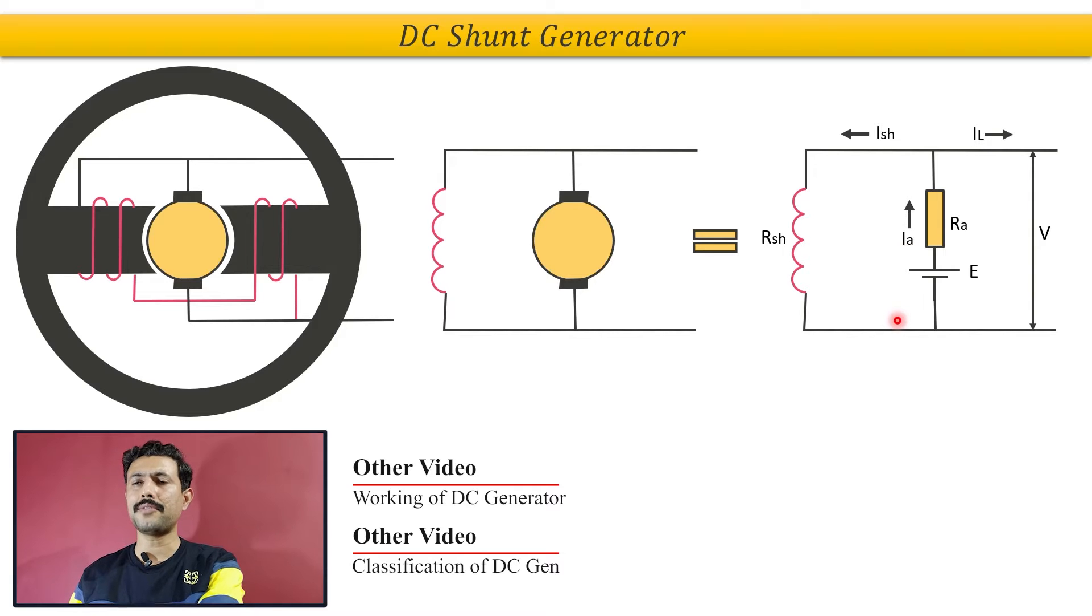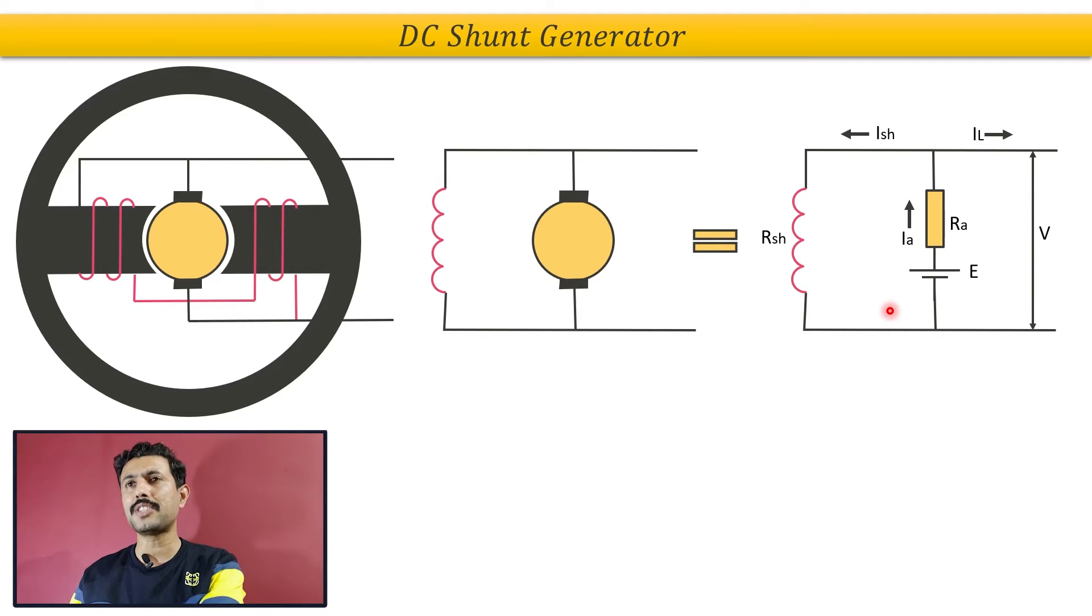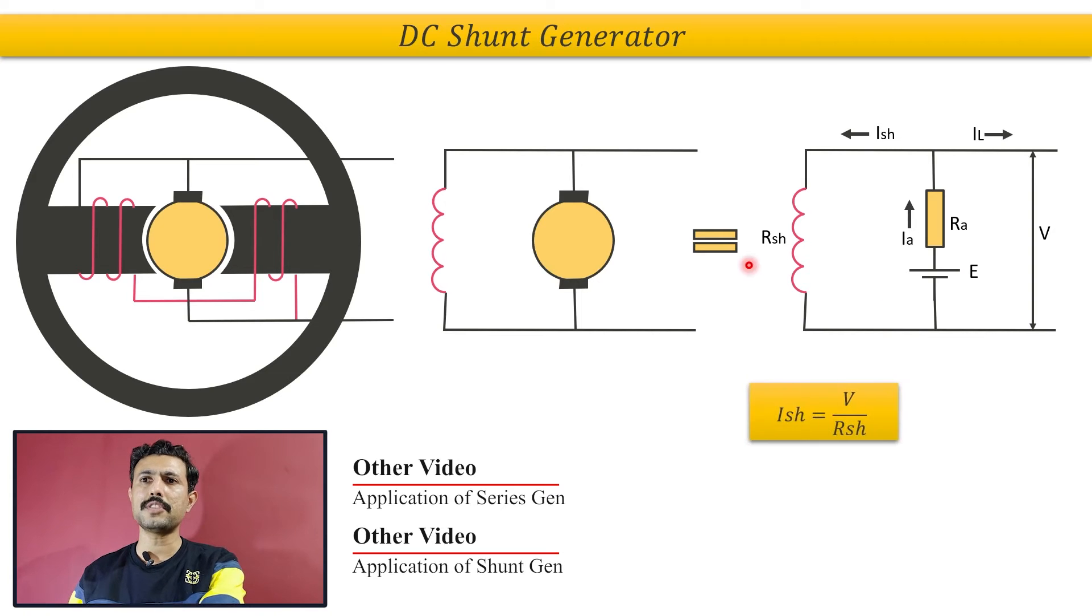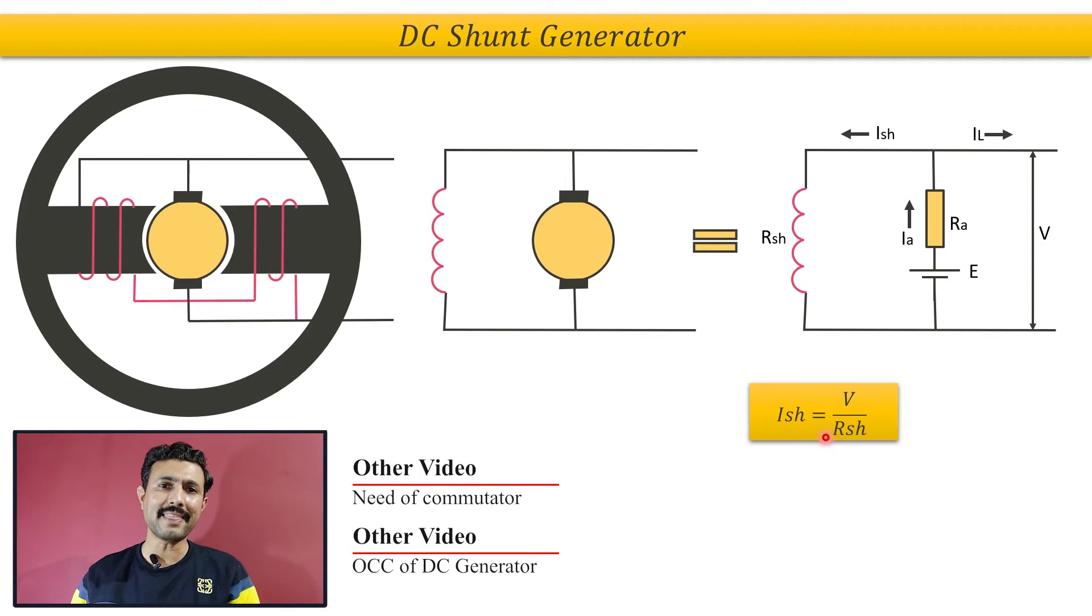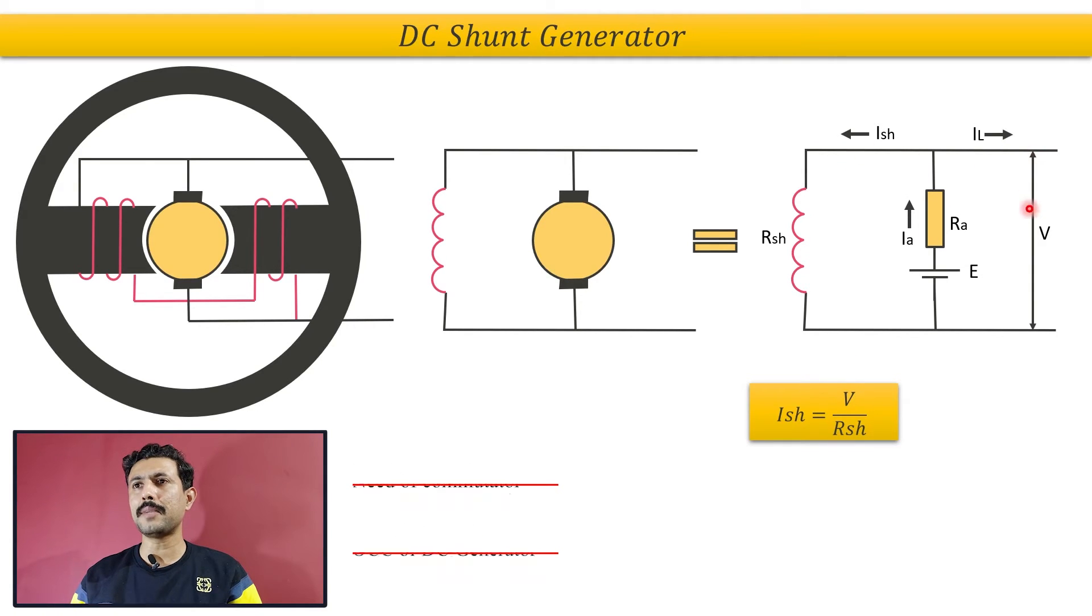So for that, first of all, let's have the equation of shunt field current. The equation of shunt field current is Ish equals V divided by Rsh. And how did we get that?